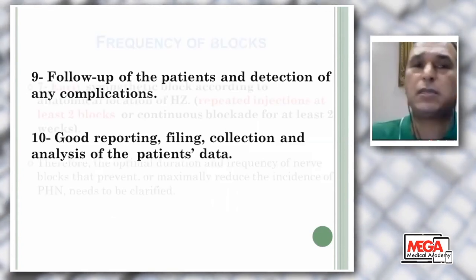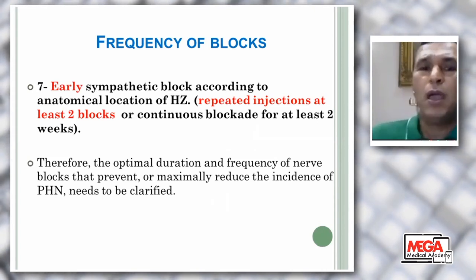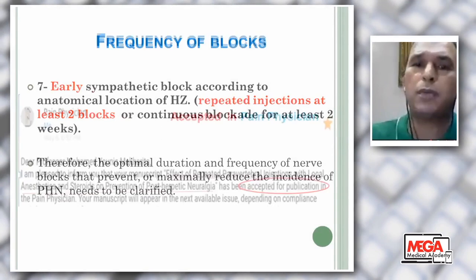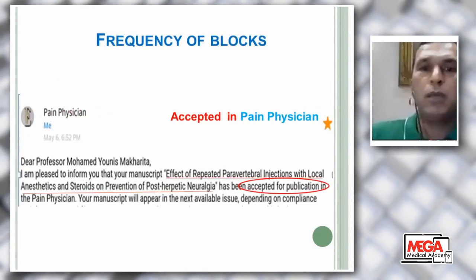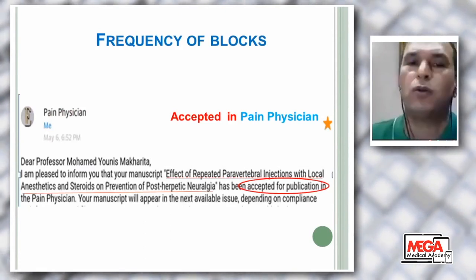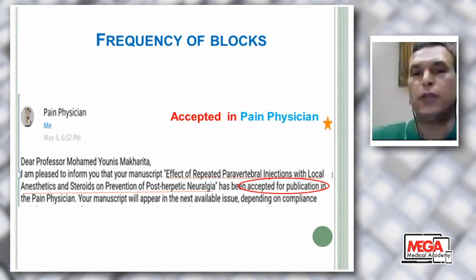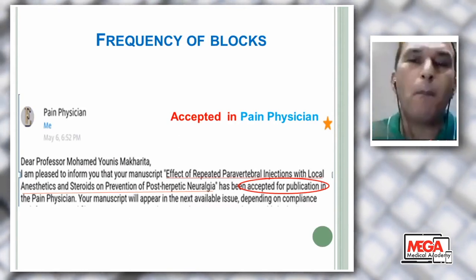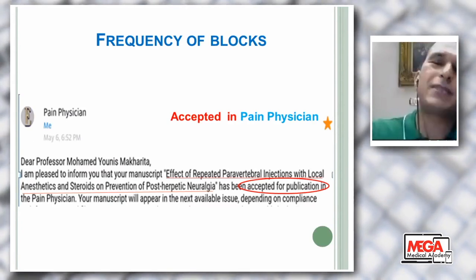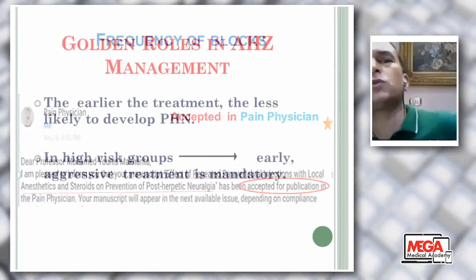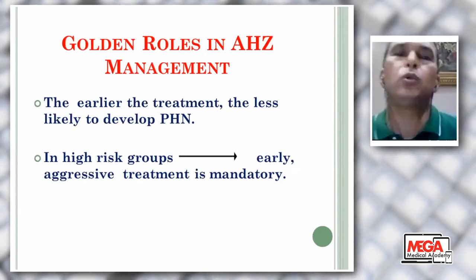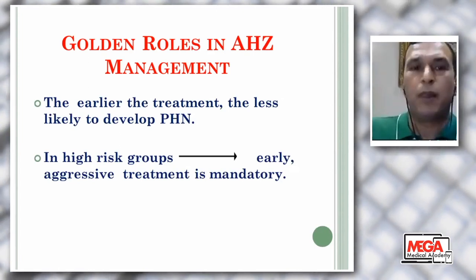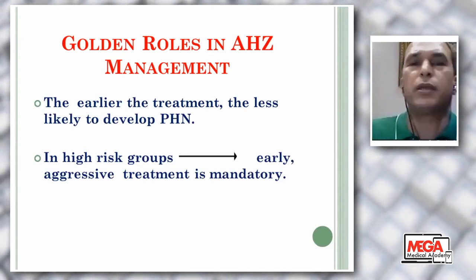From the seventh step, the number and frequency of blockade was not clarified. I said at least two to five injections. Therefore, we conducted a new study accepted in Pain Physician in May 2020: the effect of repeated paravertebral injection with local anesthetic and steroid on prevention of post-herpetic neuralgia. We found that two and three injections have equal results, but in patients with multiple comorbidities and risk factors, we prefer three injections. The golden rule: the earlier the treatment, the less likely to develop post-herpetic neuralgia. Injections must be done in the first week after eruption to avoid vasospasm and scarring of the nerve. In high-risk groups, early aggressive treatment is mandatory.